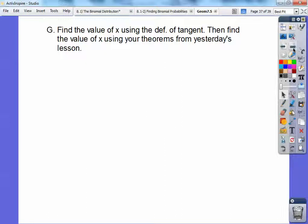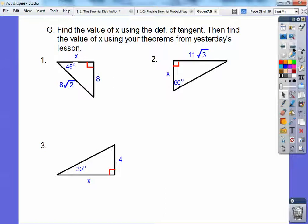Find the values X using the definition of tangent. Then find the value of X using your theorems from yesterday's lesson. Actually, let's just do yesterday's lesson on this, you guys. You can do tangent ratio if you want. I wouldn't do this. You can do Pythagorean theorem if you want. I wouldn't do this. Let's do yesterday's lesson. This is a 45-45-90 triangle. If that's 8, then this is 8 right here. Remember? And this is 8 root 2. Remember that? So this is X equals 8.